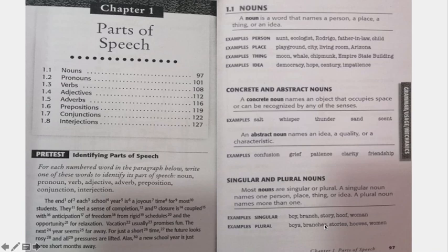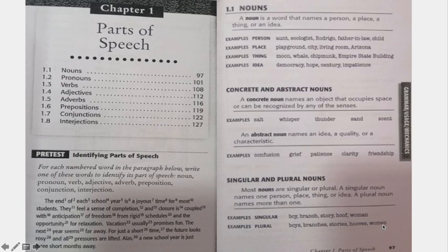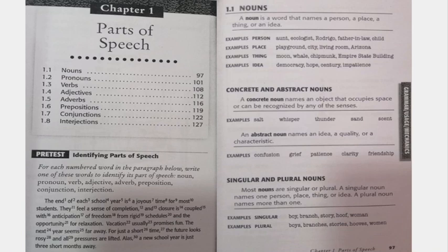You add ES for words like branch. When the noun ends in Y, you change the Y to I and add S. For hoof, you change the F to V and add ES. For woman, the A changes to E, giving you women. There are also examples where the last letters change significantly — for instance, alumnus becomes alumni, changing U-S to I.